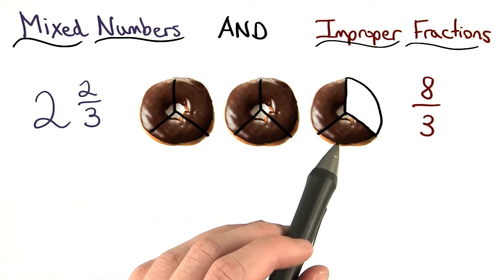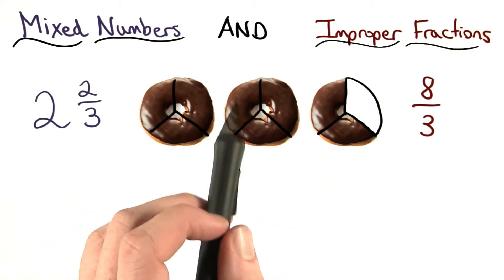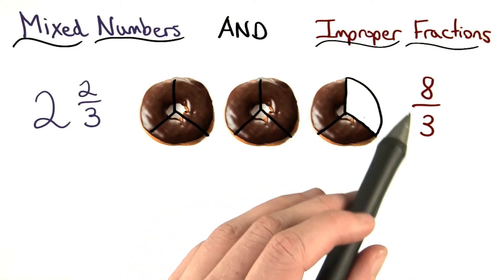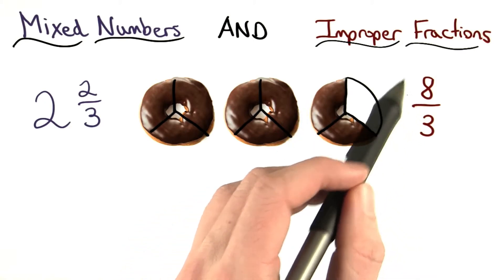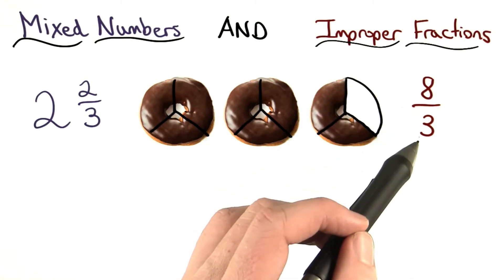If I split all of my donuts up into thirds, I could count the pieces and I would have 8 thirds. That would be the improper fraction. It's improper because the number in the numerator is higher than the number in the denominator.